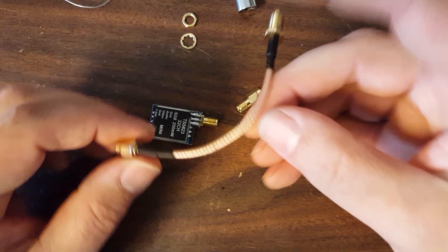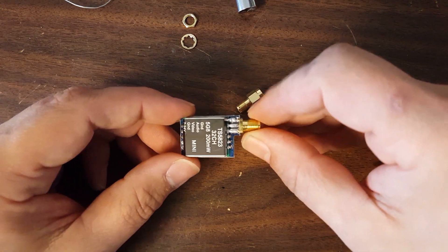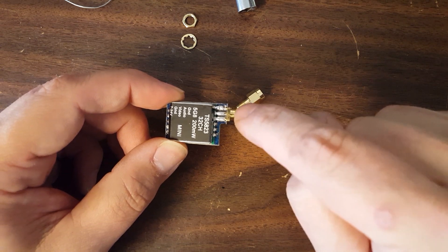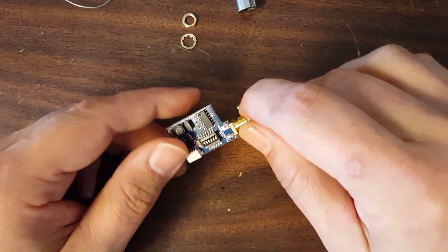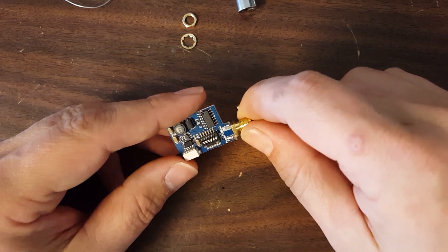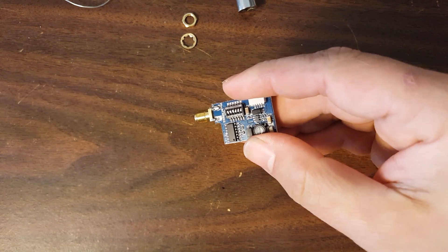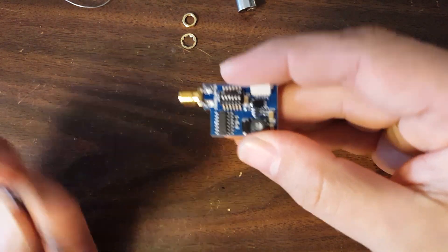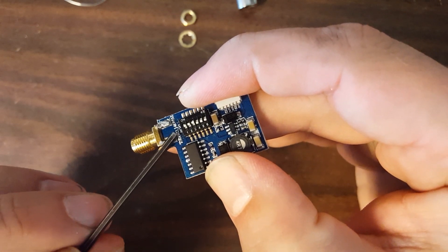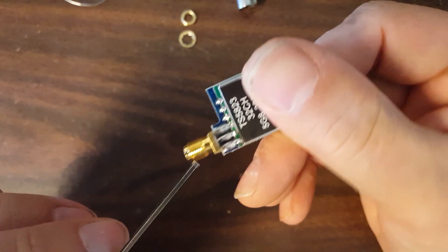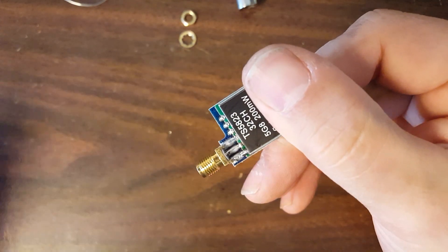So anyway, the first thing you're going to need to do is you're going to need to get this SMA connector or RP-SMA connector off your board. And if you have a hot air station, that's relatively easy, but I don't have a hot air station. And so I think the easiest thing to do is to just cut off the connector and then manually desolder the legs one by one.